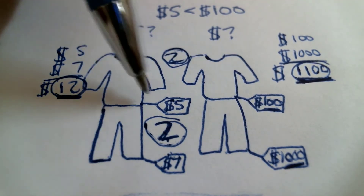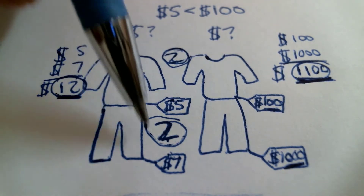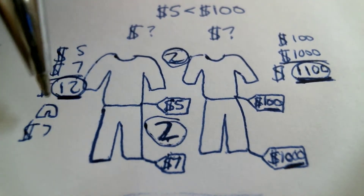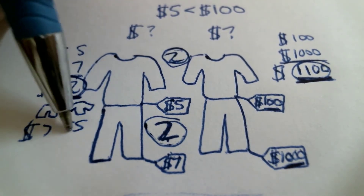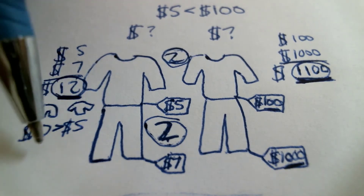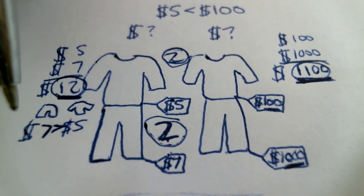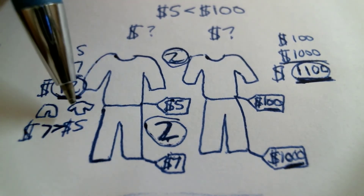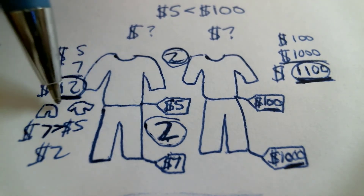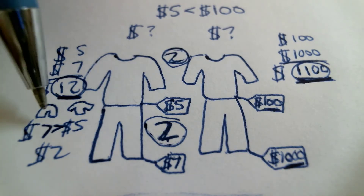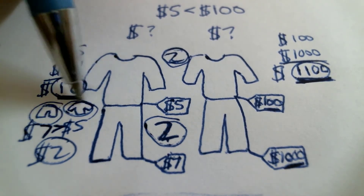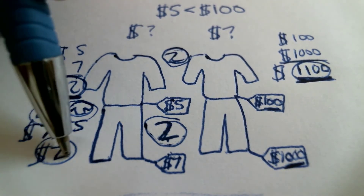What costs more — this shirt or this pair of pants? Which one is more expensive? Well, the pants cost $7 and the shirt costs $5, so the pants are more expensive than the shirt. Do the pants cost more than the shirt? Yes, the pants cost more than the shirt. How much more do the pants cost than the shirt? The pants cost $2 more than the shirt — the pants cost $7 but the shirt costs $5, so the pants cost $2 more.